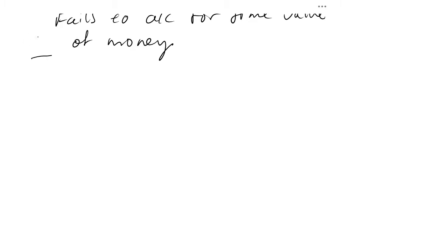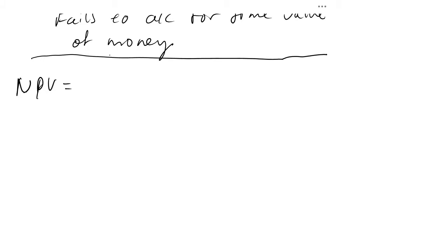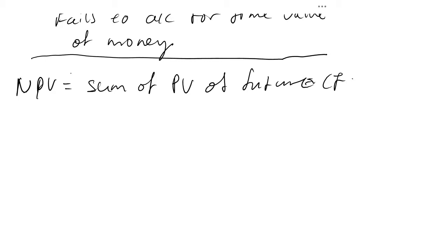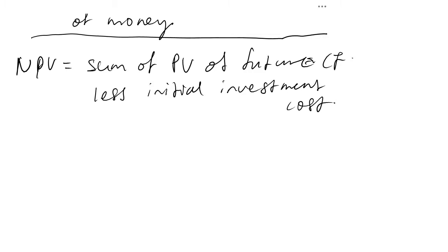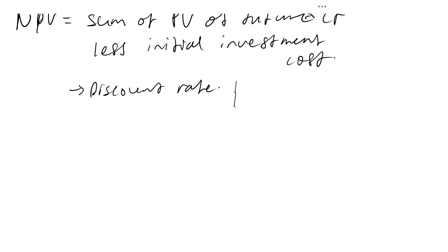The next method is the net present value method. One definition is that it is the sum of present values of future cash flows minus the initial investment cost. To calculate it, you also need one very important thing: the discount rate. The workings can be presented in a table by year — perhaps three years — with columns for net cash flow, the discount rate, and then the present value.